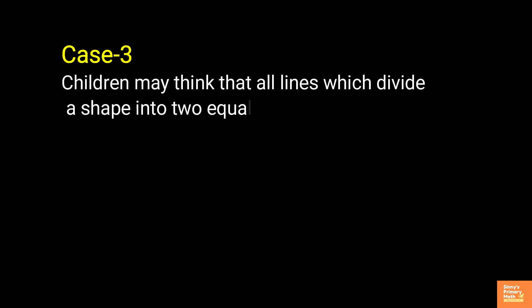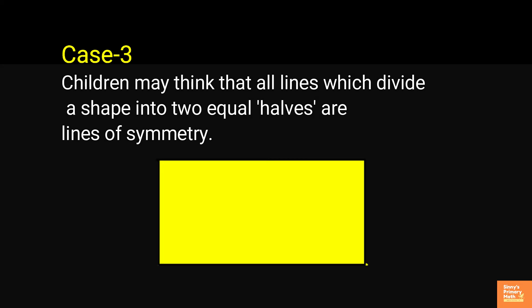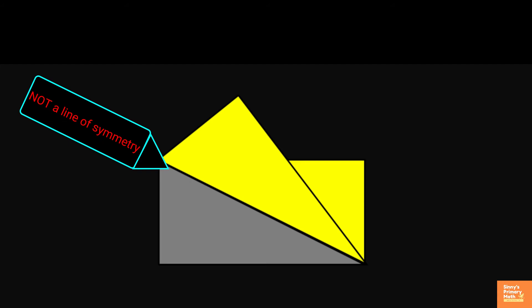Case 3: Children may think that all lines which divide a shape into two equal halves are lines of symmetry. For example, the line along the diagonals seems to divide the rectangle into two identical halves. However, if folded in half along this line, the two halves do not match exactly. This means that the diagonal line is not a line of symmetry.